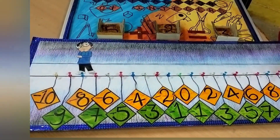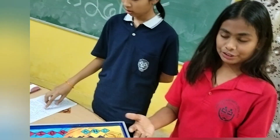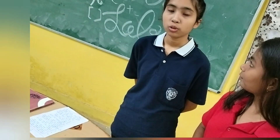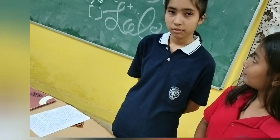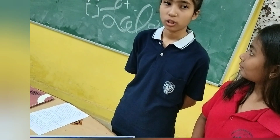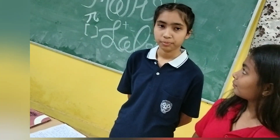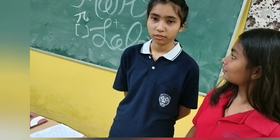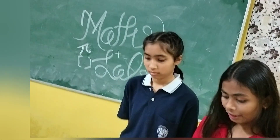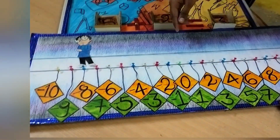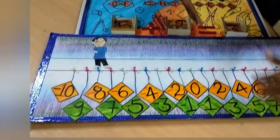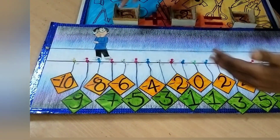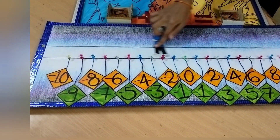When we go to the right side, they are called positive integers. When we go to the left side, they are called negative numbers. In this activity, the left side are negative integers and the right side are positive integers.